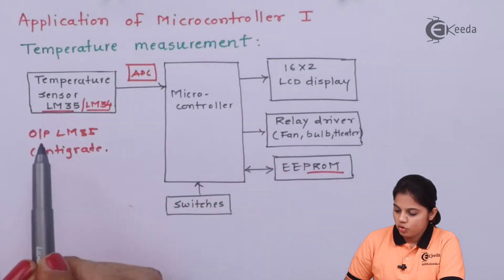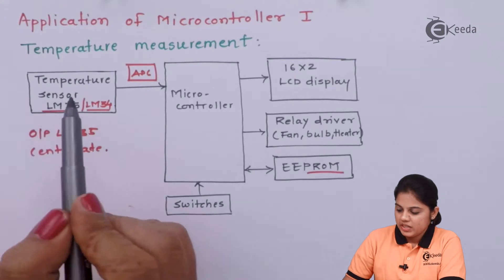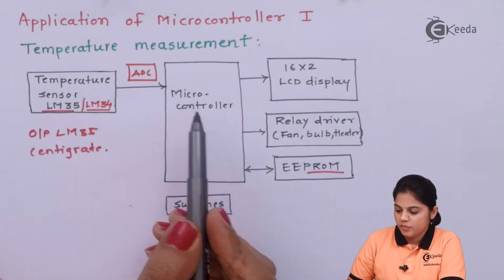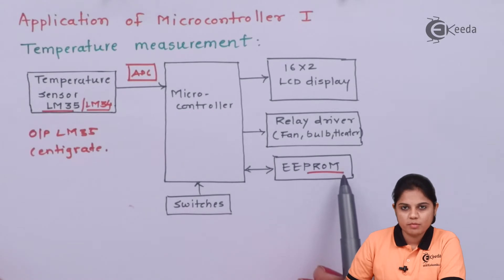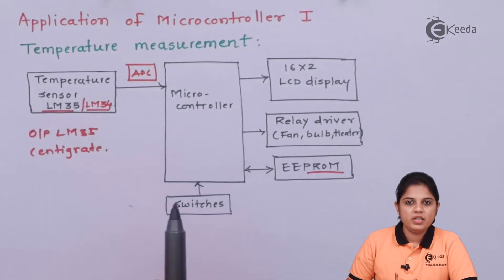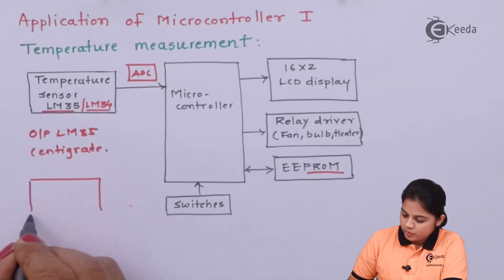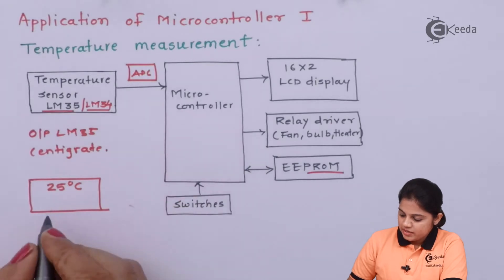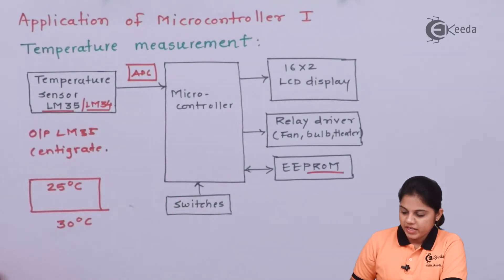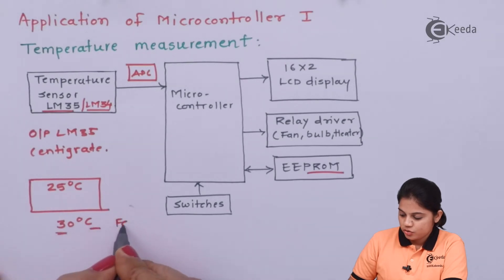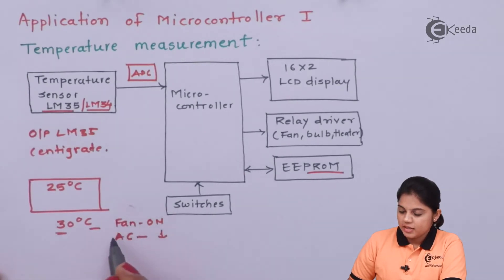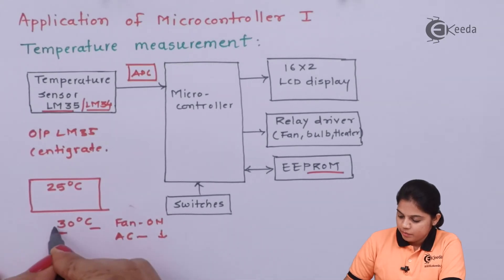The basic working of this whole diagram is: first, the sensor senses the parameter; that is converted into digital form and given to the microcontroller. After receiving data from the sensor, the microcontroller executes the written program to determine what action to perform for the received value. For example, if the room should be maintained at 25°C and the received value is 30°C, the microcontroller should act to reduce the temperature to 25°C — meaning the fan should turn on, or if an AC is present, the AC temperature should be reduced.